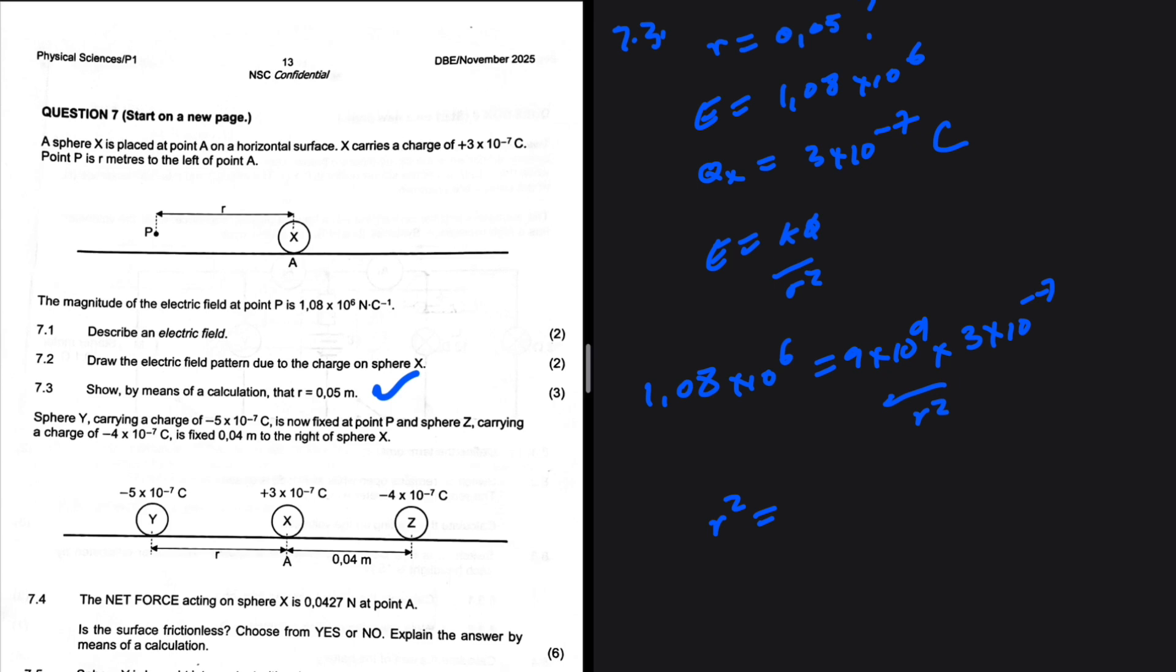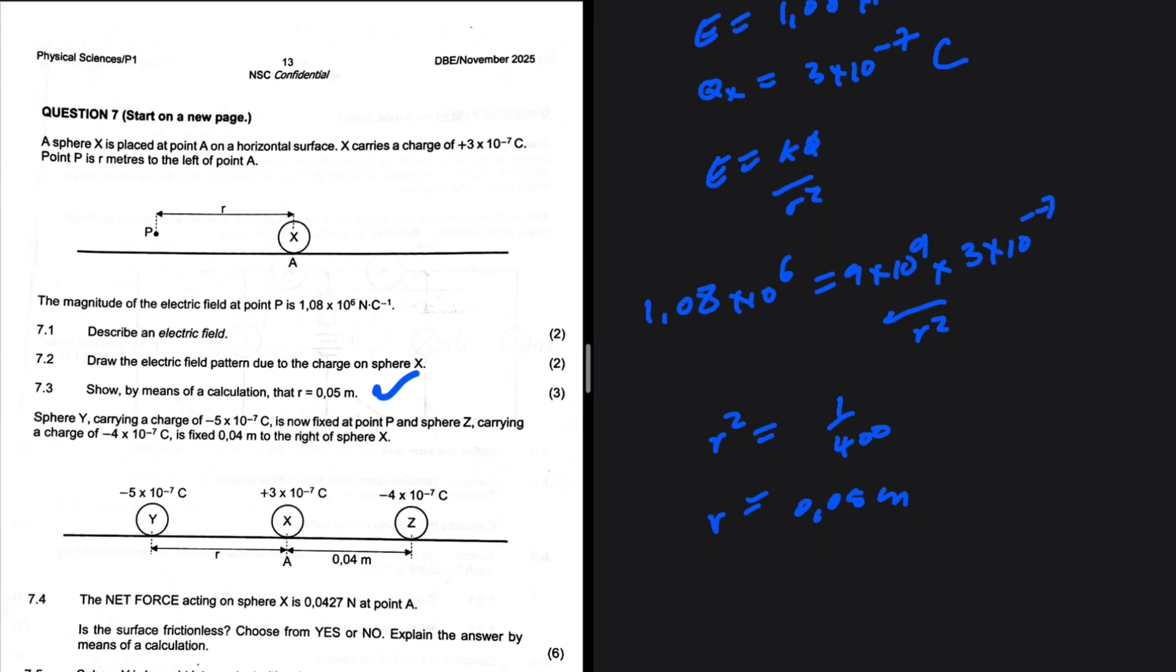So r squared equals 0.05 squared. Now I need to press my calculator: 9 times 10 to the power 9 multiplied by 3 times 10 to the minus 7 divided by 1.08 times 10 to the power 6. So r is equal to the square root of that, that is 0.05. So r is close to 0.05 meters. 7.3 done.